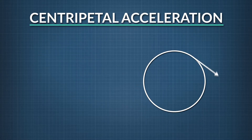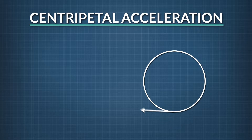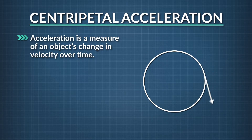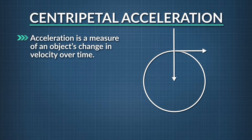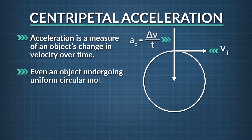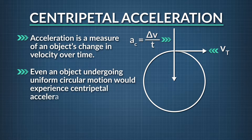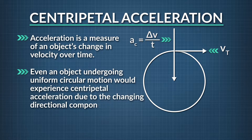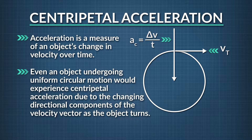Centripetal acceleration is also a key property of all objects that undergo uniform circular motion. Acceleration is a measure of an object's change in velocity over time. Since velocity is a vector quantity, which requires both a magnitude and direction, even an object undergoing uniform circular motion would experience centripetal acceleration due to the changing directional components of the velocity vector as the object turns.